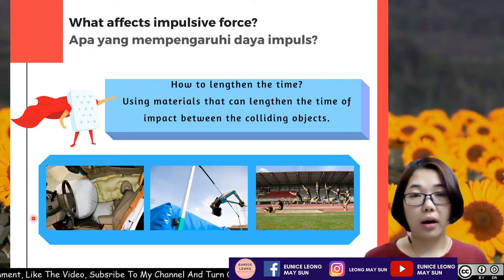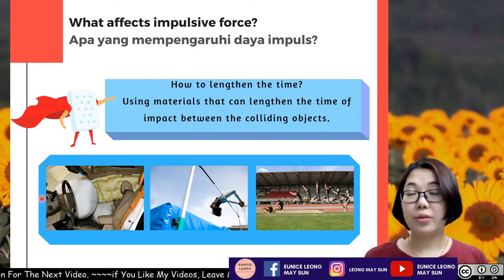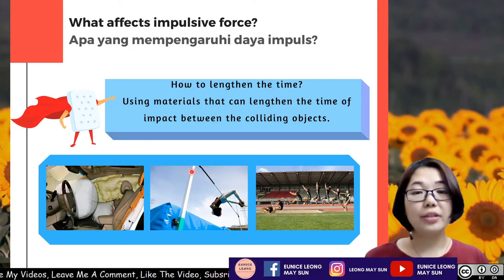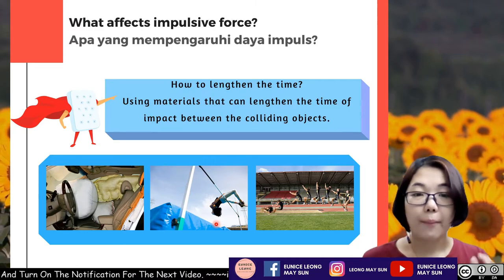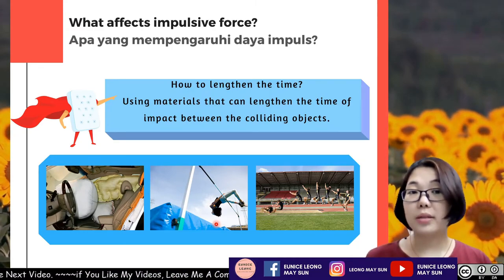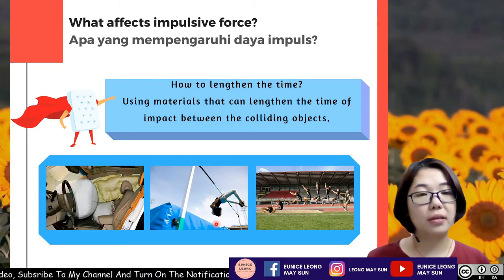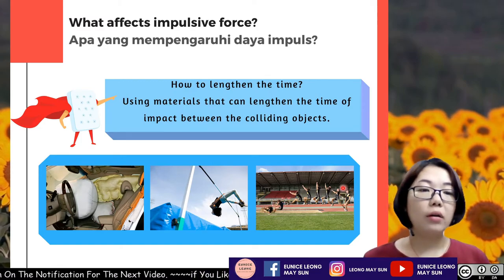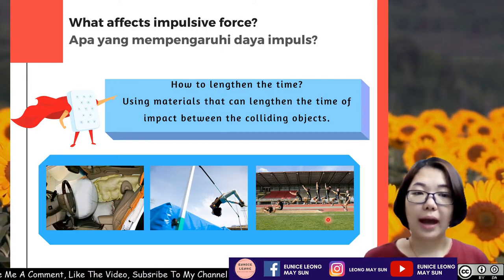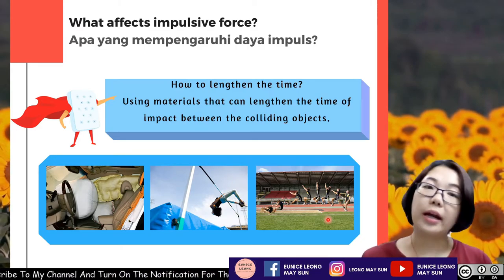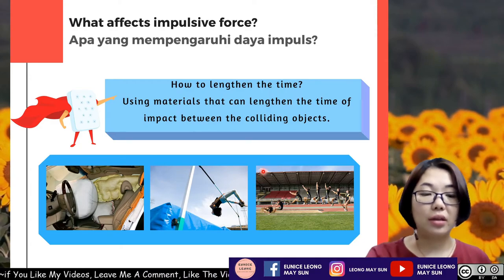We can lengthen the time of impact using materials that extend the contact time. For example, an airbag in a car increases the time of impact between the passenger or driver and the steering wheel, helping to prevent injuries. In high jump, a thick soft mattress is placed at the landing side to lengthen the time of impact between the athlete and the floor. In long jump, athletes land on a pit filled with loose sand, which increases the time of impact, reducing the impulsive force and thus reducing the chances of injury.